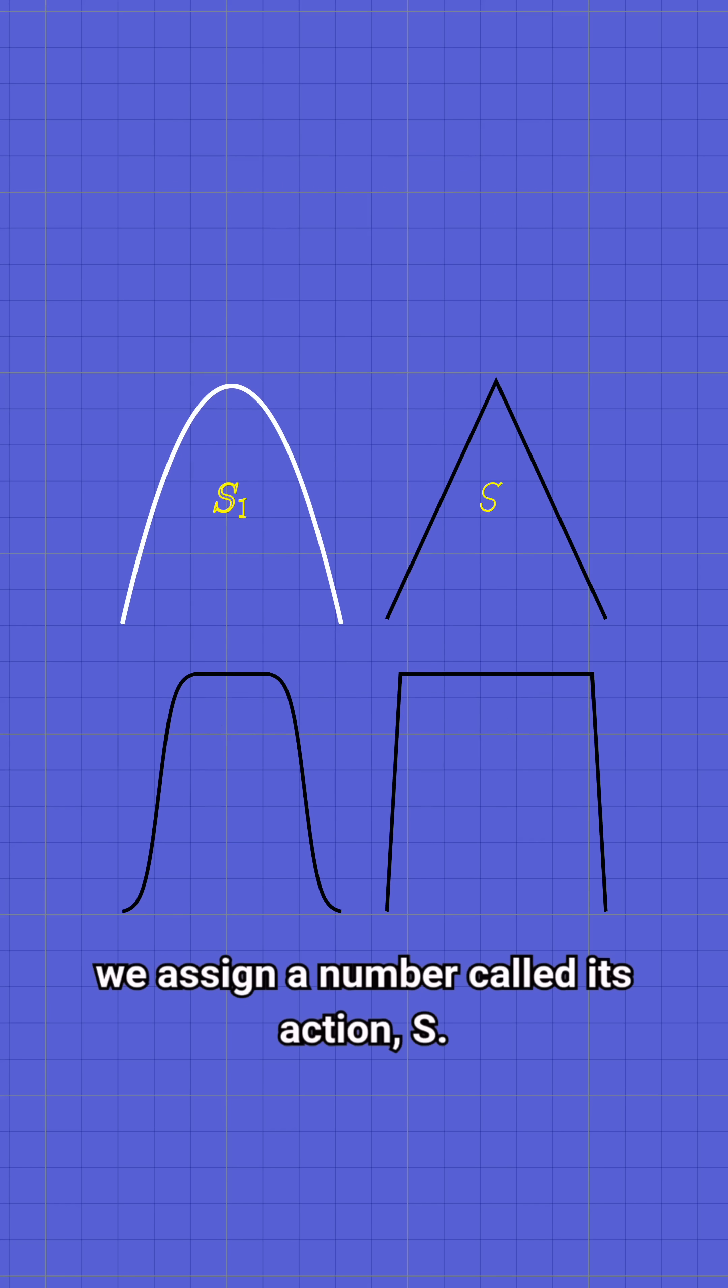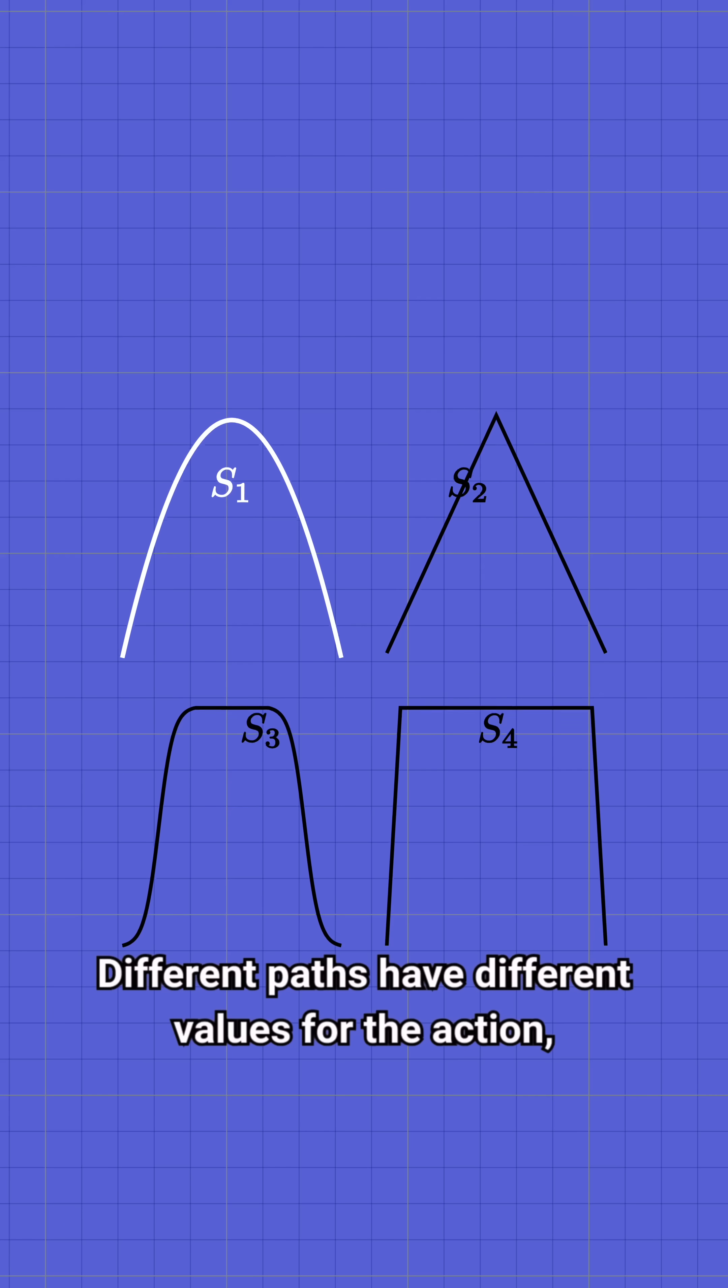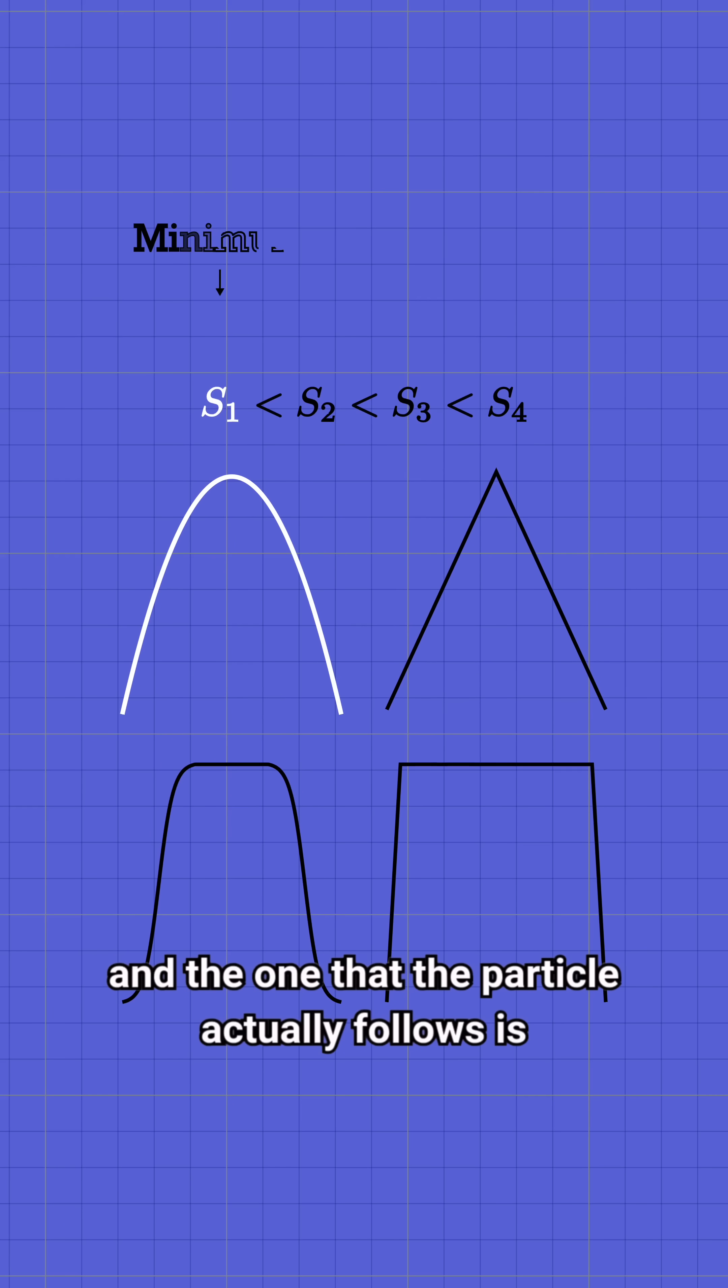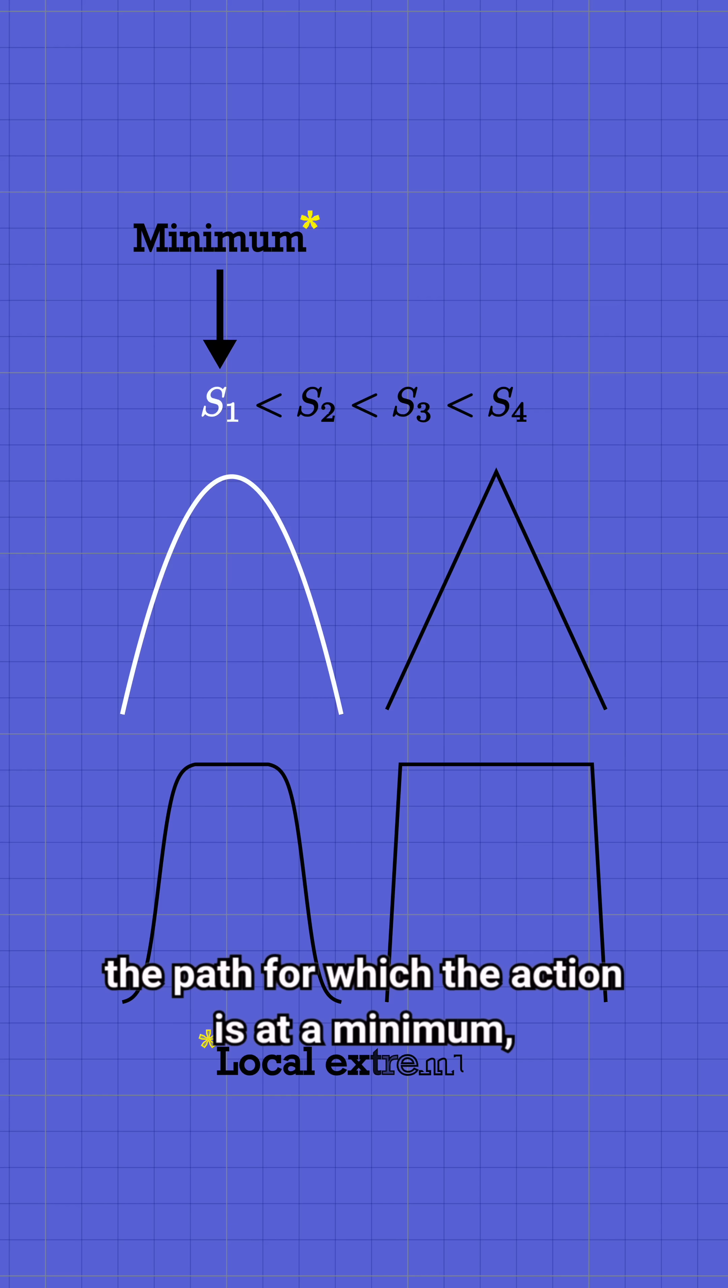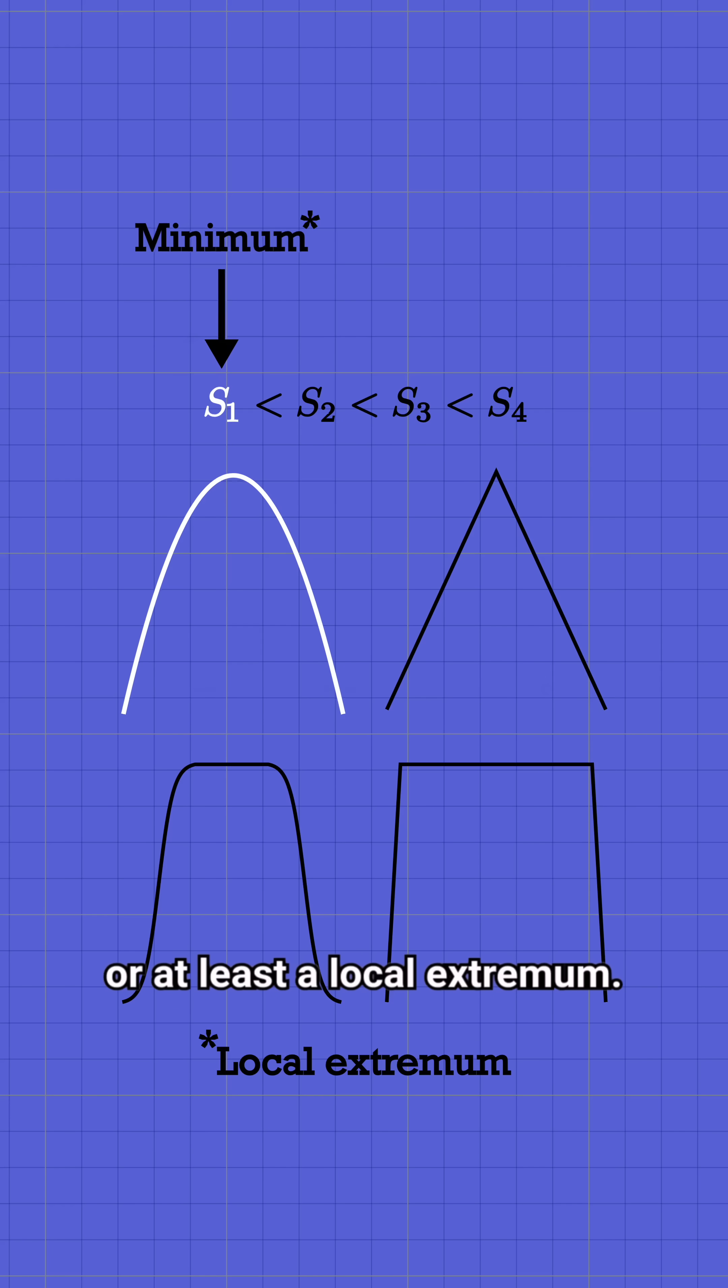To each possible path, we assign a number called its action, s. Different paths have different values for the action, and the one that the particle actually follows is the path for which the action is at a minimum, or at least a local extremum.